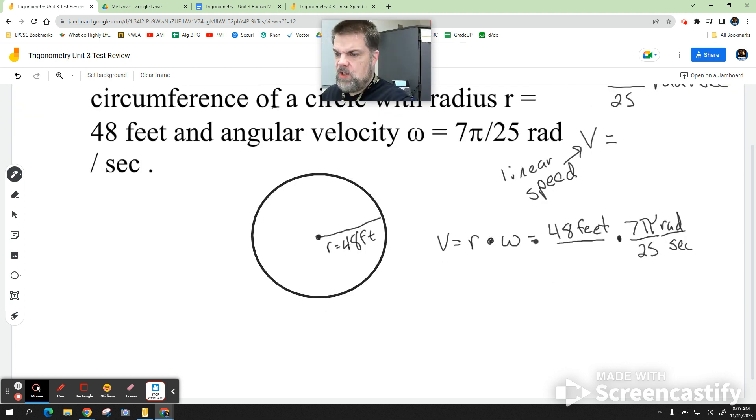So, if you do the math on that, and we want to leave it as an exact value, I think, somebody double-check this on the calculator. I think 47, or 48 times 7 is 336. Somebody double-check that? Okay. And so, we'll just say 336 pi over 25 radians per, not radians, it's feet. Feet per second.